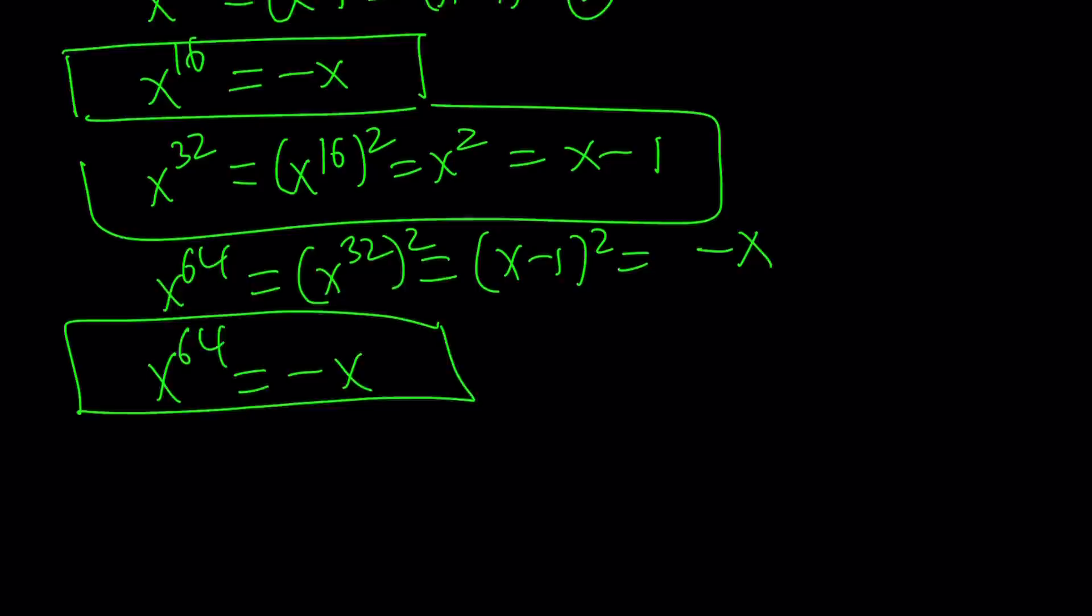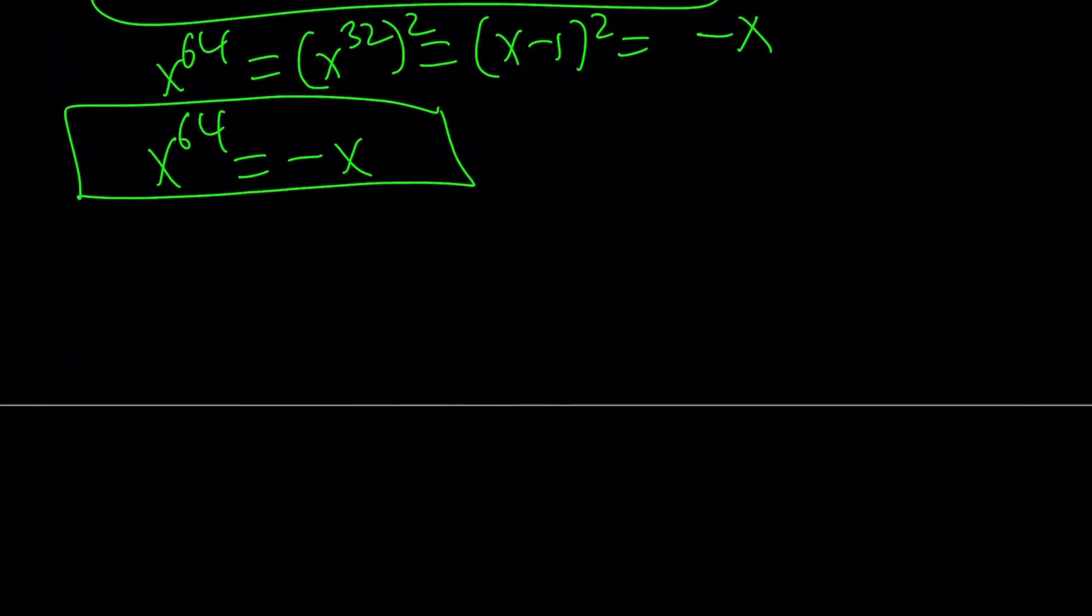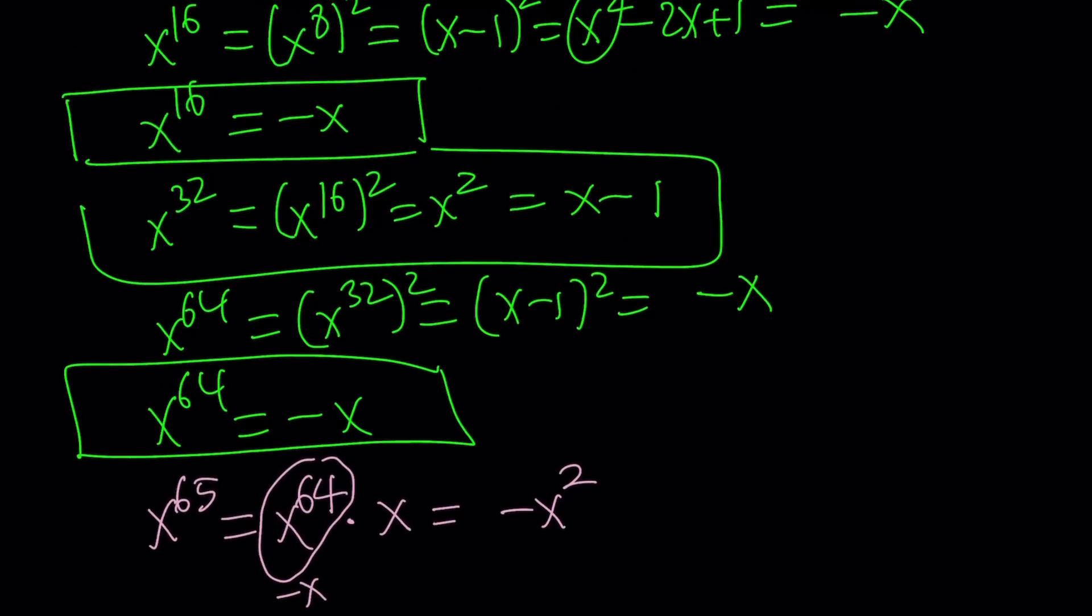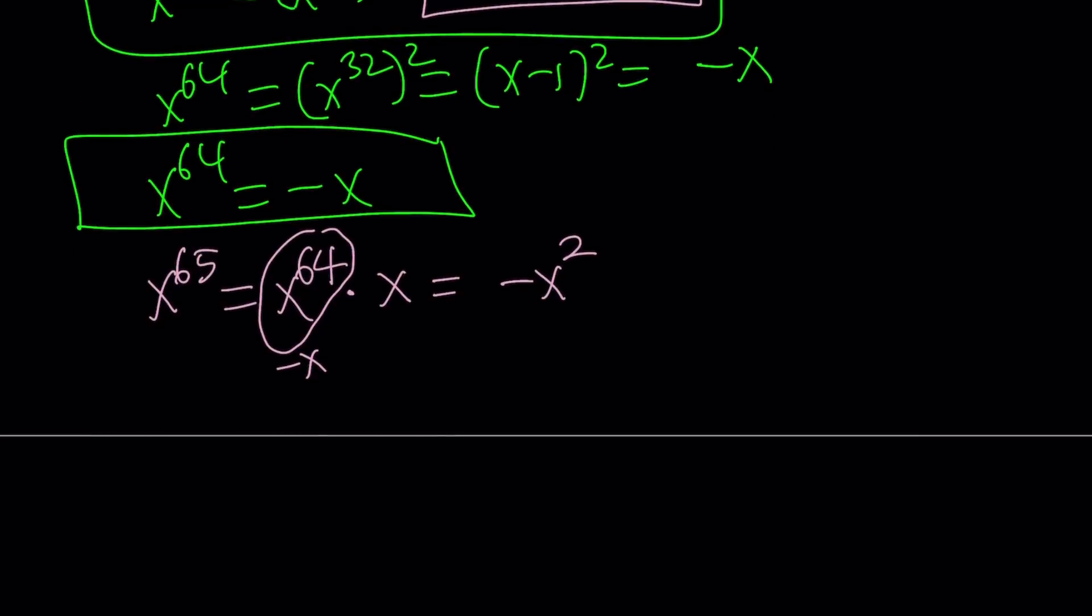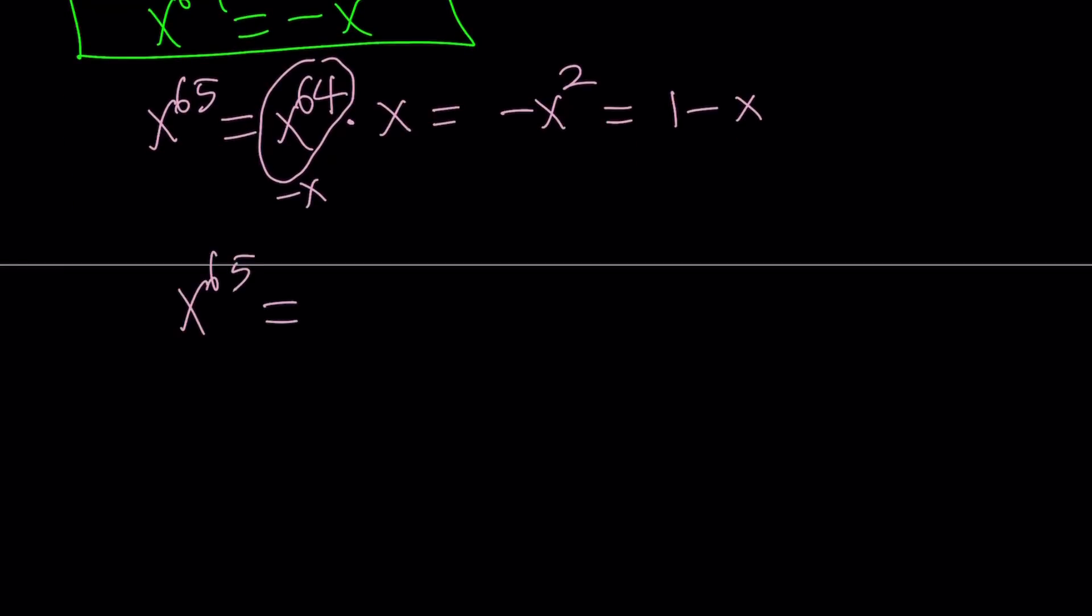This is what I was trying to reach. Now, I do need the 65th power, but that can easily be obtained. I can just go ahead and multiply. To find x to the power of 65, I can multiply x to the 64 times x. But now notice that x to the power of 64 can be written as negative x. So if I replace, that gives me negative x squared. And remember, x squared can always be replaced with x minus 1. So the opposite of that would be 1 minus x. So x to the power of 65 can be written as 1 minus x.